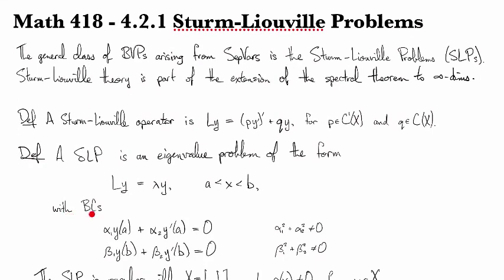We have boundary conditions. At the endpoint a, we want a linear combination of y and its derivative to equal 0. At the endpoint b, we want some linear combination of y and its derivative to equal 0. Here we require that the sum of the squares of these two terms is non-zero.